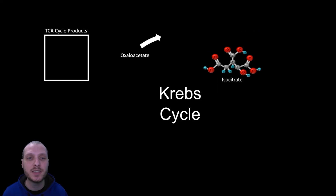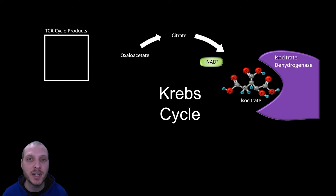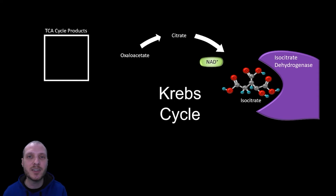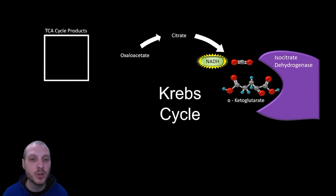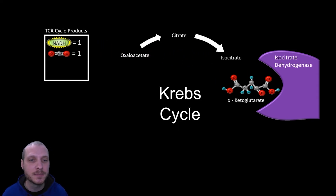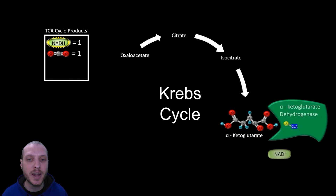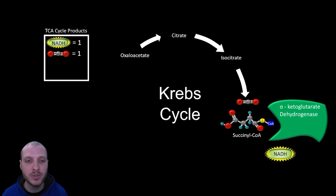Isocitrate continues on and meets another enzyme called isocitrate dehydrogenase. A dehydrogenase enzyme steals hydrogen atoms off a molecule — in this case, placing them on NAD+ to create an electron-rich NADH molecule. Along with that, carbon and oxygen are removed to form CO2, which we breathe out. The resulting molecule is called alpha-ketoglutarate. This continues on to interact with alpha-ketoglutarate dehydrogenase — again stealing hydrogen atoms to generate another NADH and more CO2 — and a CoA group is added to create succinyl-CoA.